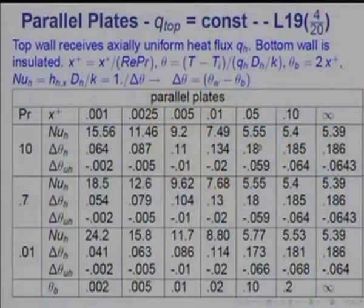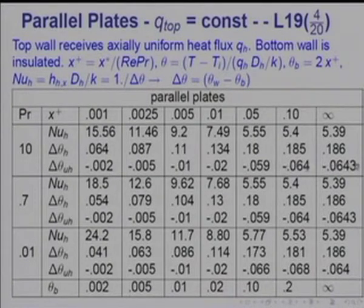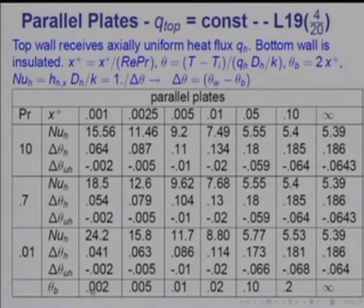This can be deceptive — x-plus equal to 0.1 at Prandtl number 0.01 actually represents a shorter physical length than when the Prandtl number is 10. So in as much as I say x-plus equal to 0.1, it does not mean the same physical length at low Prandtl number. At low Prandtl number the physical length is shorter than it is for Prandtl number greater than 1, say 10. These are very instructive solutions. Notice also that on the unheated side, the wall temperature is less than the bulk value in all cases.